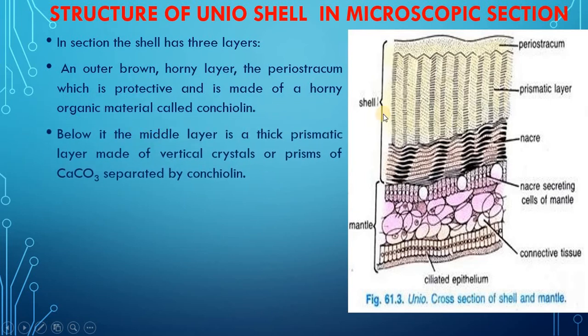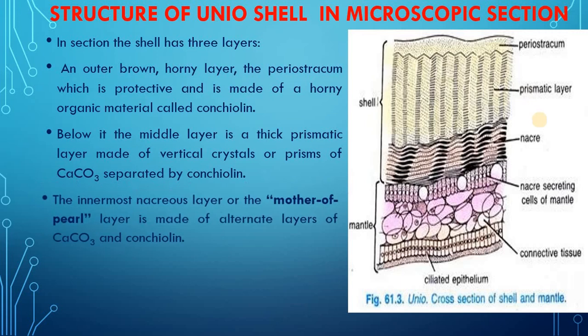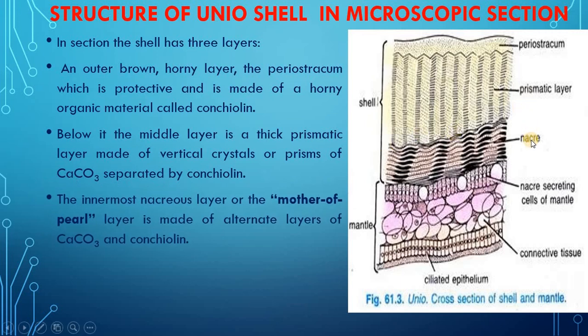Below it is the middle layer — a thick prismatic layer made of vertical crystals or prisms of calcium carbonate separated by conchioline. The innermost nacreous layer, commonly termed the mother of pearl, is made of alternate layers of calcium carbonate and conchioline. Here you can see the alternate pattern in the nacreous layer.